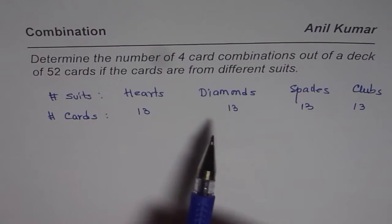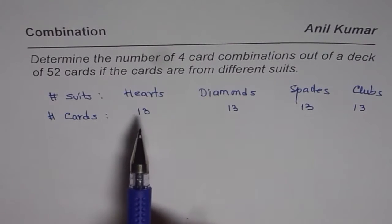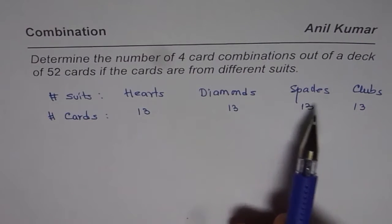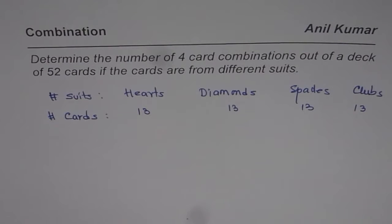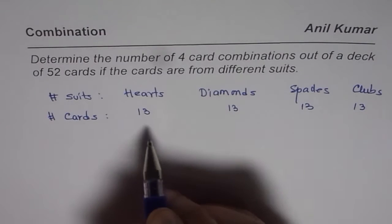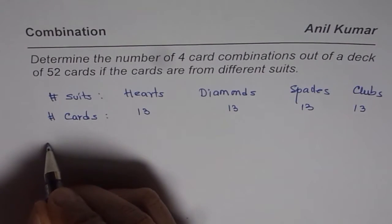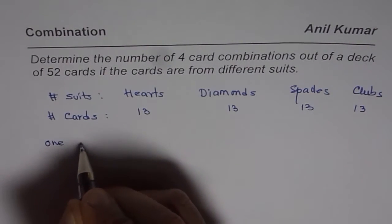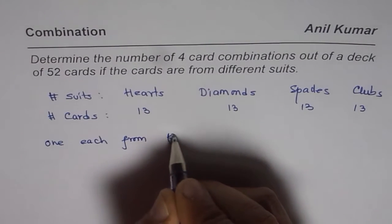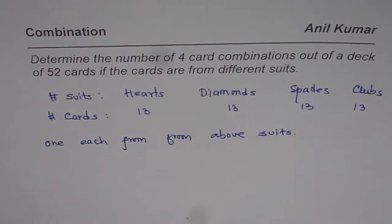What we need to do is draw four cards where all four should be of different suits. That means one from hearts, one from diamonds, one from spades, and one from clubs — all simultaneously. The condition here is one each from each of the above suits.